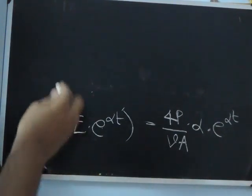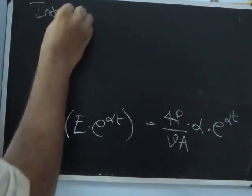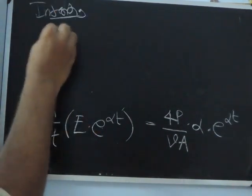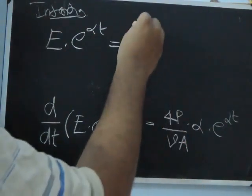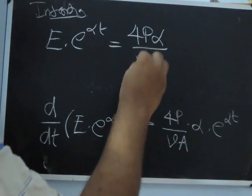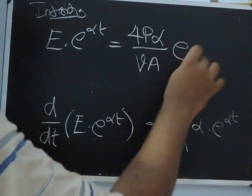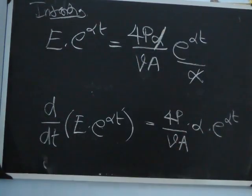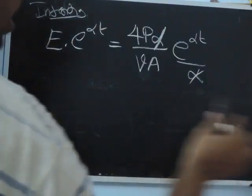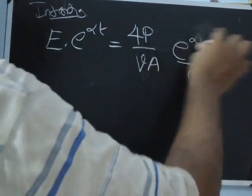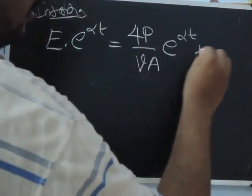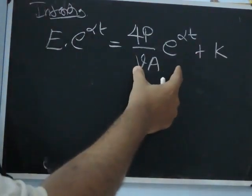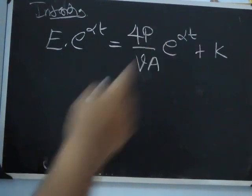So integrating both sides: the left side integrates simply to E times e^(αt). On the right, all the quantities 4P·alpha by VA are constants, and integration of e^(αt) is e^(αt) divided by alpha — so the alpha cancels, giving 4P by VA times e^(αt). Of course we'll have plus K, the constant of integration, since this integration was done without limits.